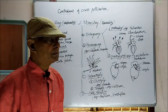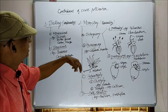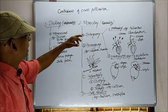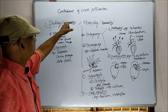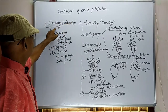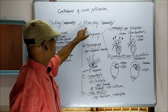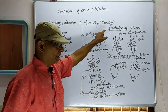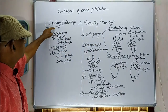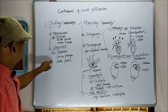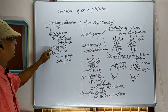The contrivances of cross-pollination is given as a flow chart here and we'll see one by one. Contrivances are first classified into dicliney or unisexuality, and second monocliny and bisexuality. The dicliney or unisexuality is further subdivided into monoecious and dioecious.